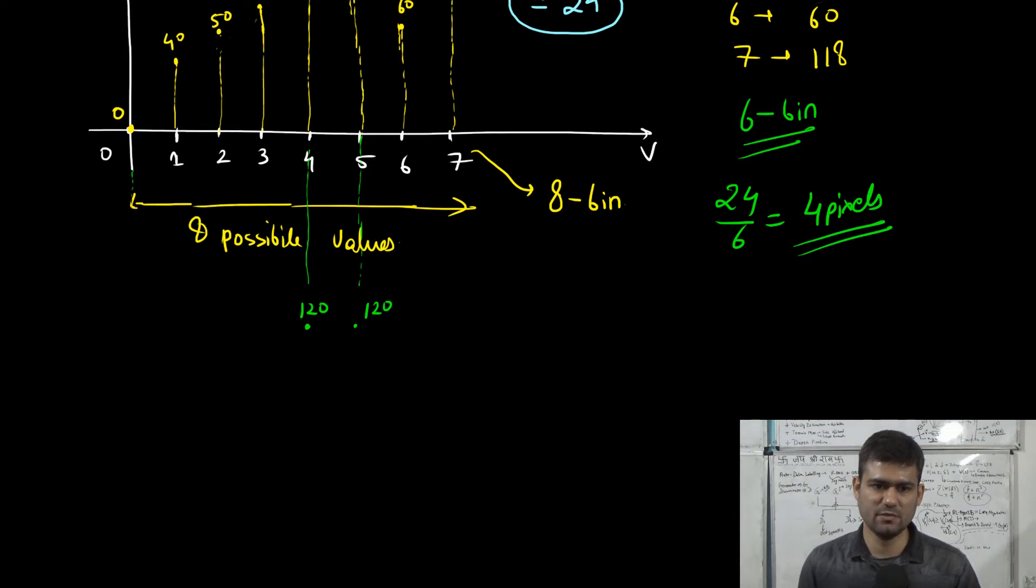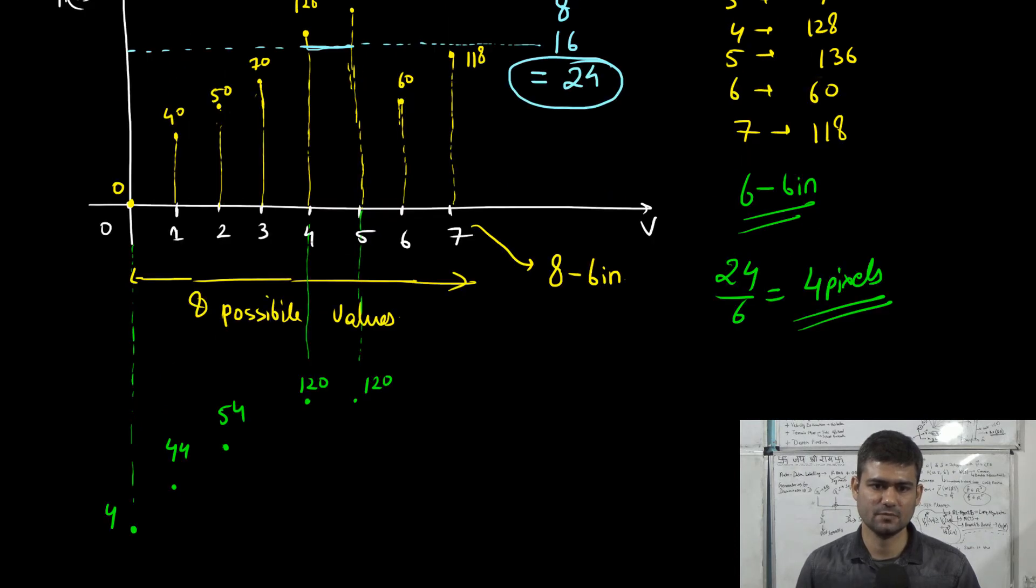Bin corresponding to the gray level value 0 would get 4 pixels. Bin number 1 would now have 44 pixels. Bin corresponding to the gray level value 2 will have 54 pixels. And so on, we will have 74 pixels over here.